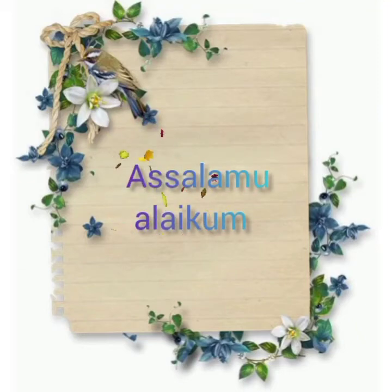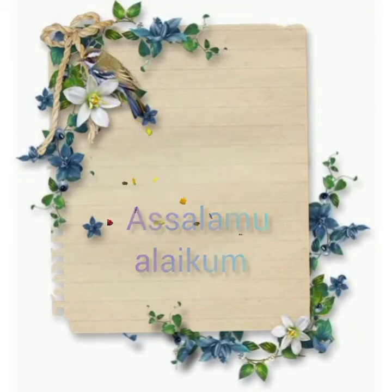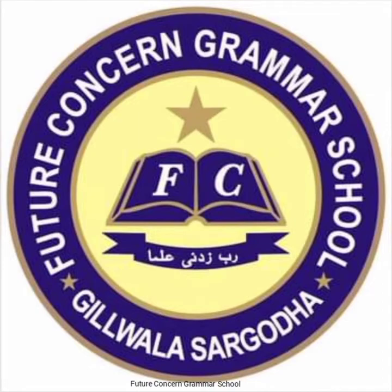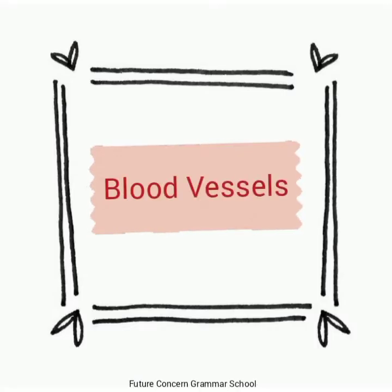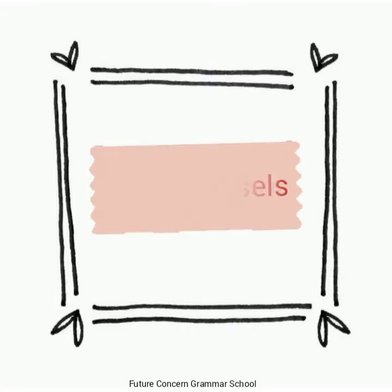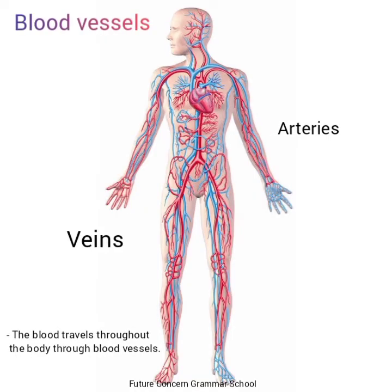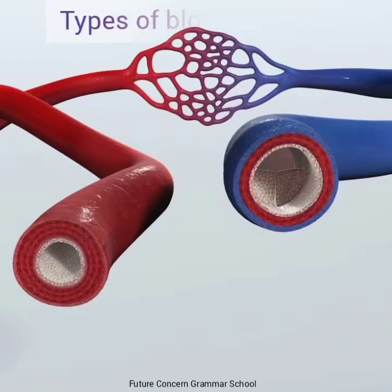Assalamu alaikum friends, how are you all? Hope you are doing well. This is a video lecture from After Grammar School. Today we will learn about blood vessels. Blood travels throughout the body through blood vessels — پورا جسم میں blood vessels کے ذریعے حرکت کرتا ہے۔ The three types of blood vessels are arteries, capillaries, and veins.